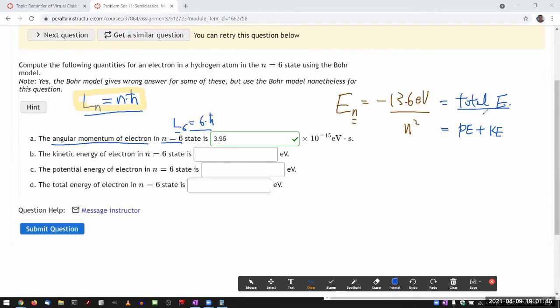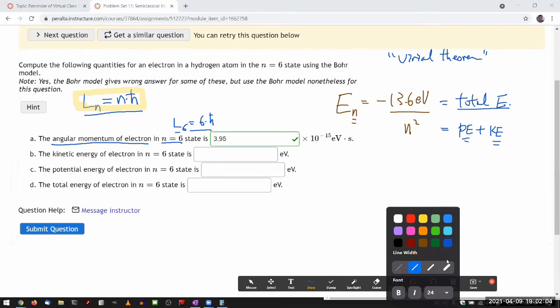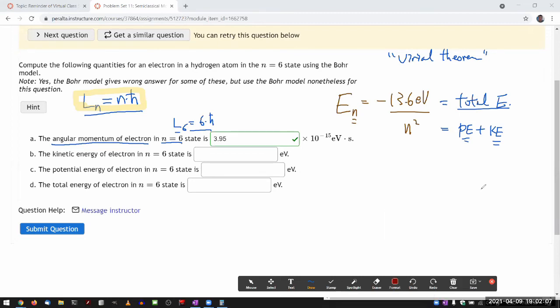There's something called the Virial theorem that tells you how, in general, for one over r potential, how the potential energy is related to kinetic energy. I'll just cite the result. The Virial theorem says that for V is one over r potential, potential energy is equal to minus two times the kinetic energy.